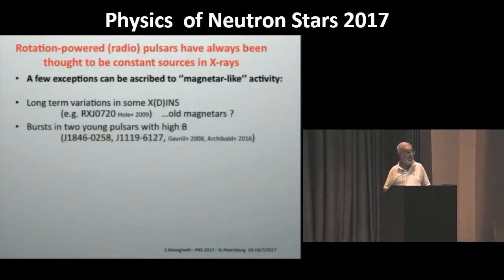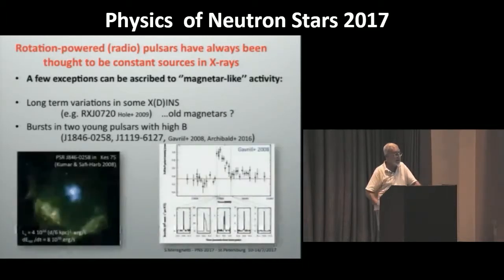Another example of variability in X-ray rotational powered pulsars are the bursts that have been observed in a couple of high B-field objects. You see this very short burst, resembling those of soft gamma ray repeaters and anomalous X-ray pulsars, coupled to an enhanced X-ray emission. This is probably related to some kind of magnetar-like activity.